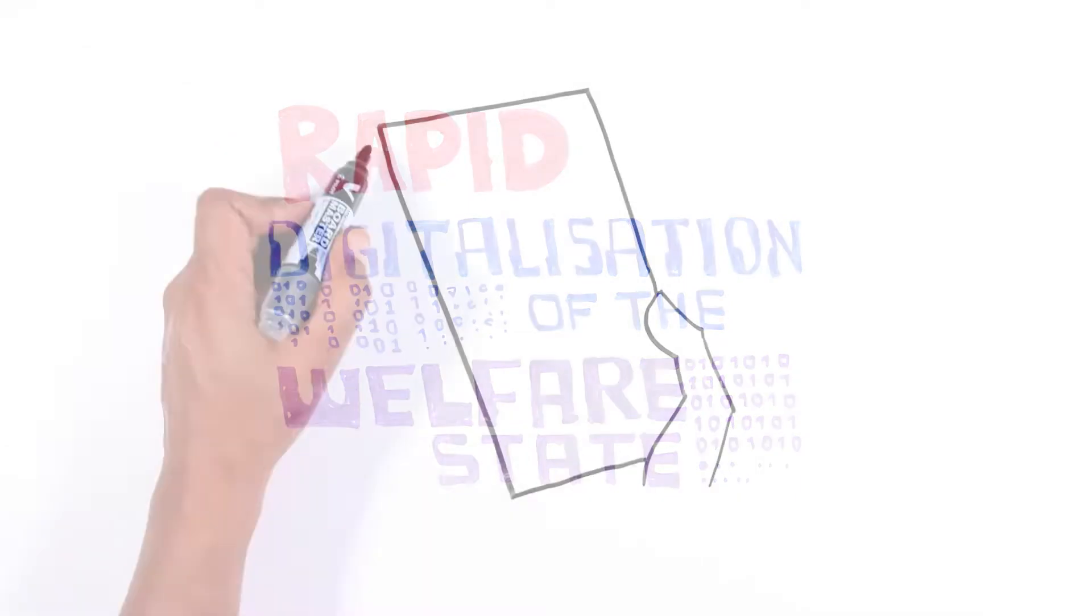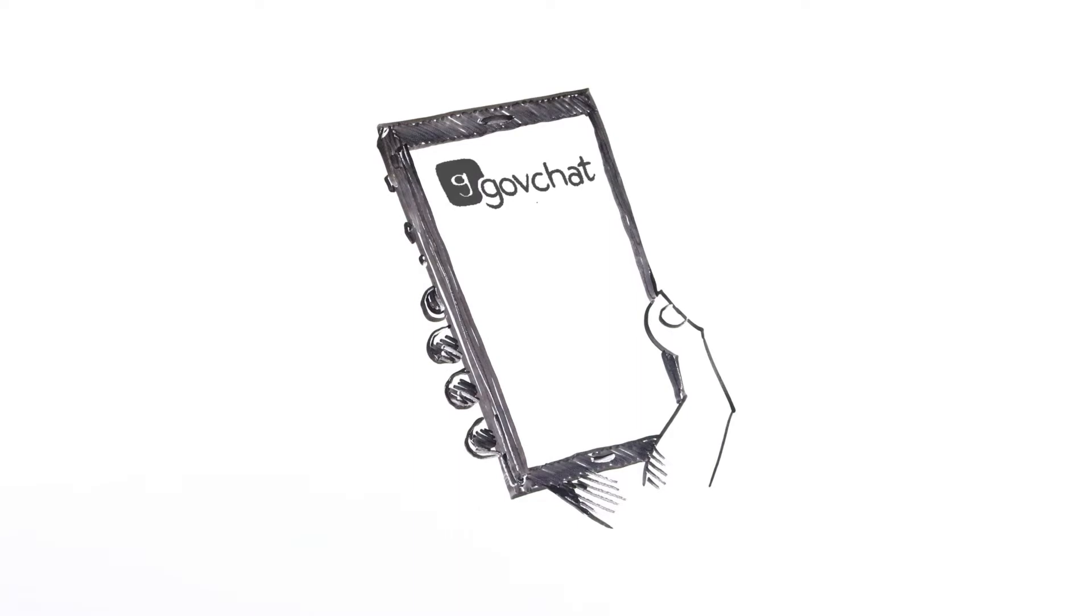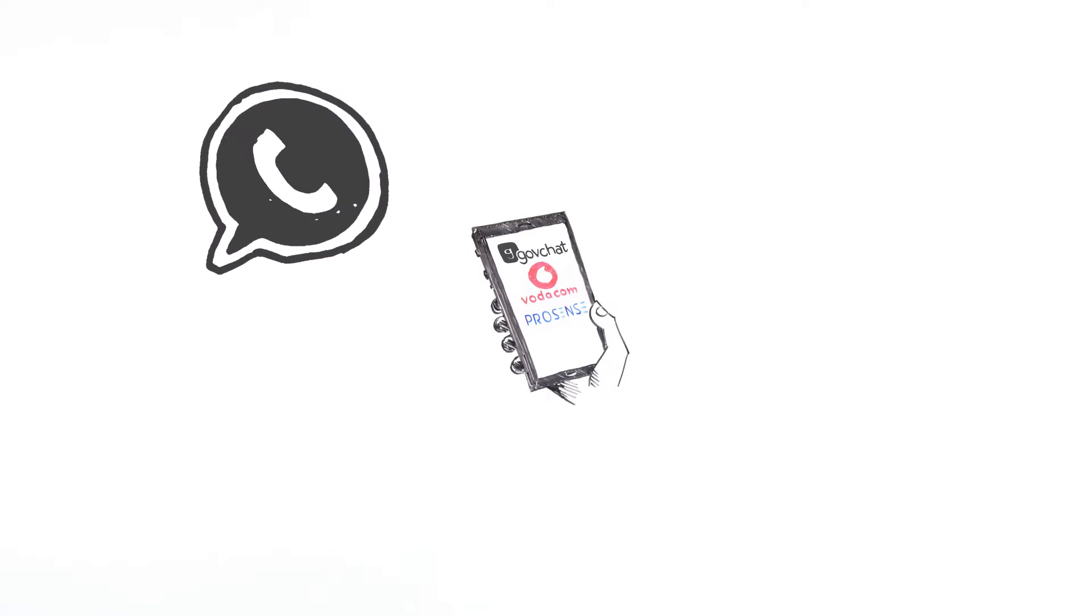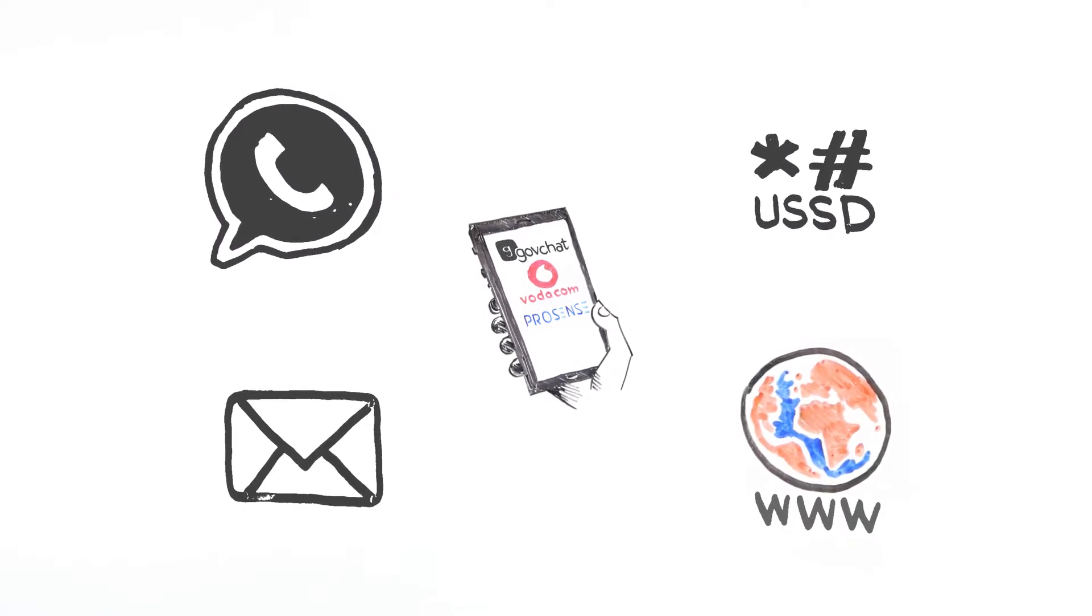SASA turned to three private partners to design online registration processes for the grant: GovChat, Vodacom, and ProSense. This uses WhatsApp, USSD, web, and email platforms, but GovChat's WhatsApp platform has become the most important.